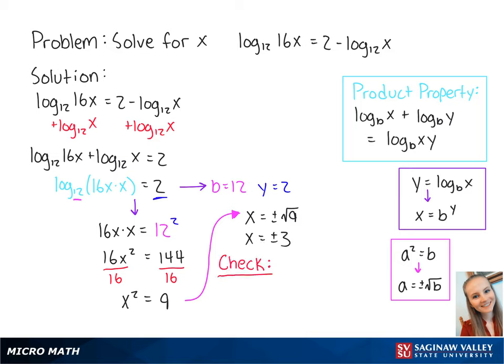Now we check for extraneous solutions. For x equals 3, all the logs are positive, so this works. For x equals negative 3, there are two negative logs, so this is an extraneous solution. Therefore, x equals 3 is the final answer.